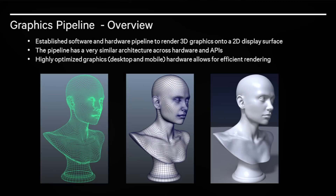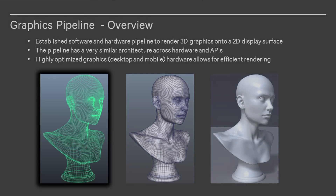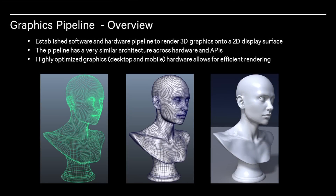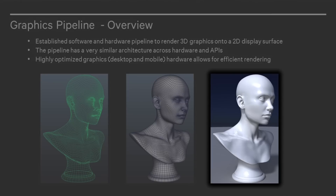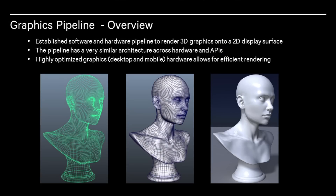What is a graphics pipeline? A graphics pipeline is a set of software and hardware to render 3D geometry onto a 2D surface. The pipeline has evolved over years through many revisions of APIs like OpenGL and DirectX. Most of the heavy computational work is accelerated by specialized hardware. The image on the left is a highly detailed mesh shown flat shaded and rendered on the right. Let's dig deeper into the pipeline and see what happens inside to create the final image.